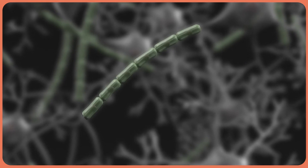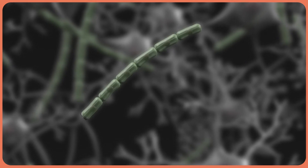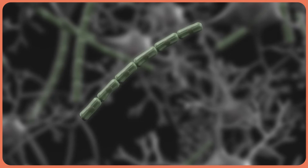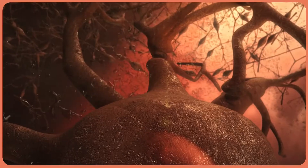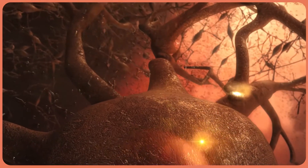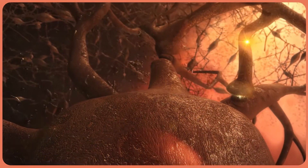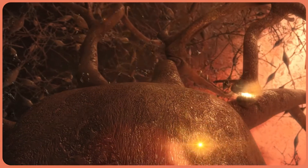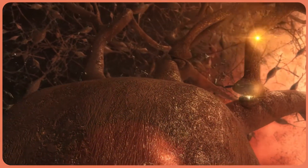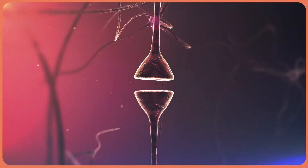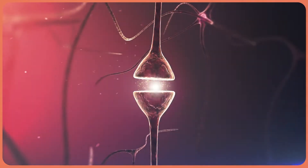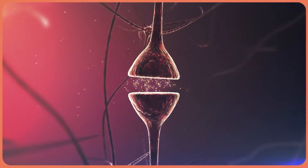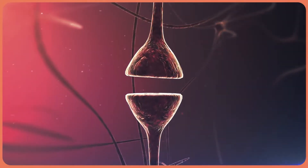Axons can also end up in other tissues, like muscles, transmitting commands to them as needed. When nerves talk to each other, it's called neurotransmission. They do this by releasing chemical messengers called neurotransmitters across the spaces between cells, which are called synapses.